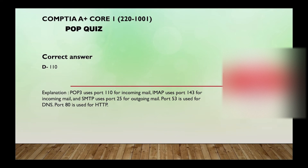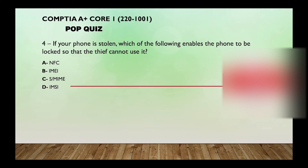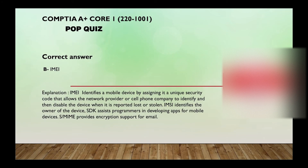Number four: if your phone is stolen, which of the following enables the phone to be locked so that the thief cannot use it — NFC, IMEI, S/MIME, or IMSI? The correct answer is IMEI. IMEI identifies a mobile device by assigning it a unique security code that allows the network provider or cell phone company to identify and disable the device when it's reported lost or stolen.